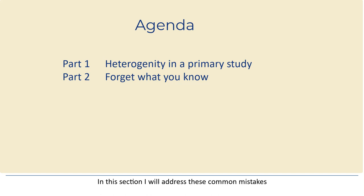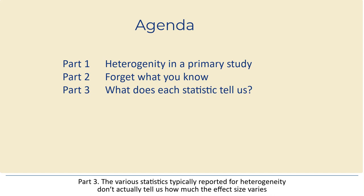I will also explain what statistic does tell us how much the effect size varies. Part three: the various statistics typically reported for heterogeneity don't actually tell us how much the effect size varies. So, what do they tell us?